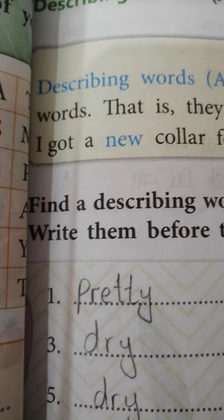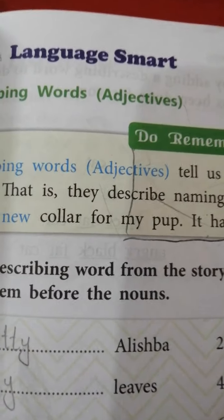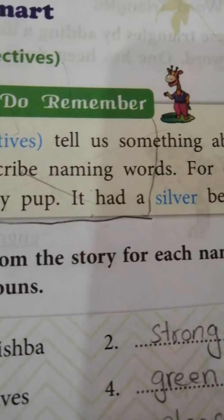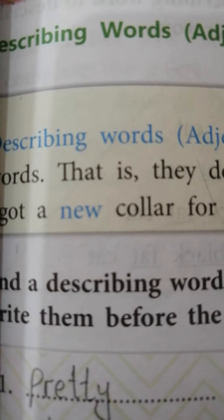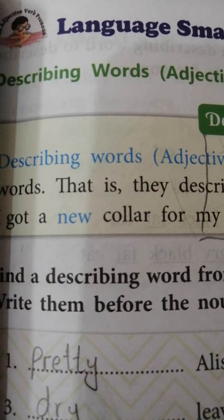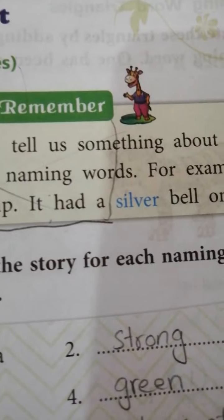So the naming word here is collar — a collar is the name of something. I got a new collar for my pup, and it had a silver bell on it. The describing words are new (describing collar) and silver (describing bell).